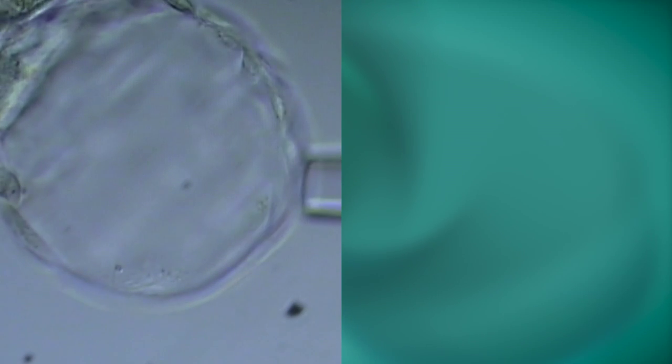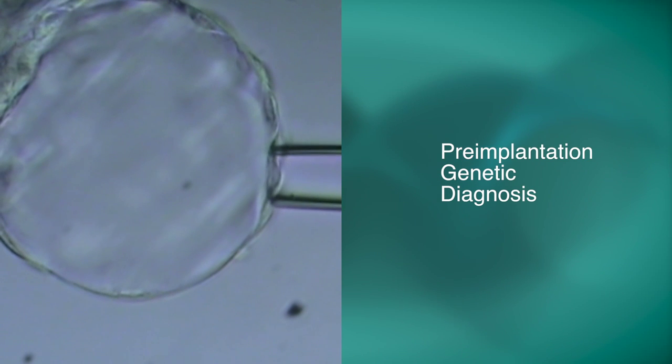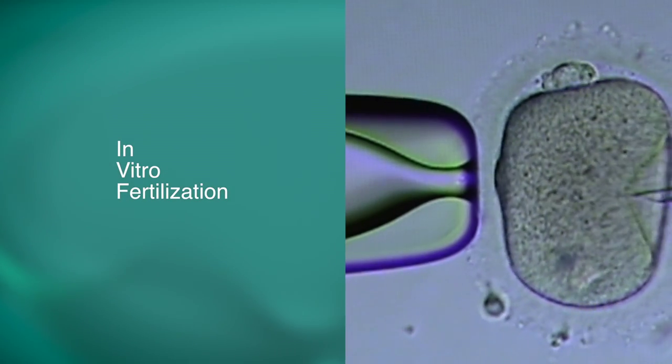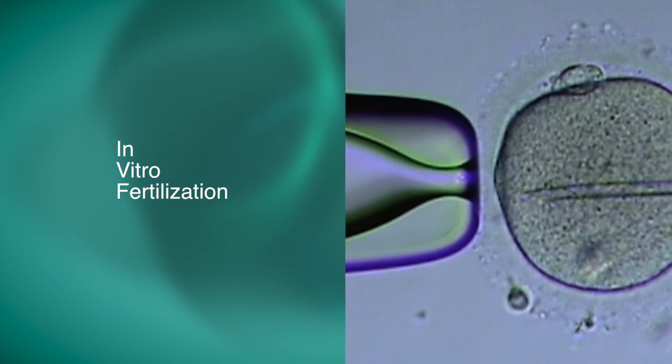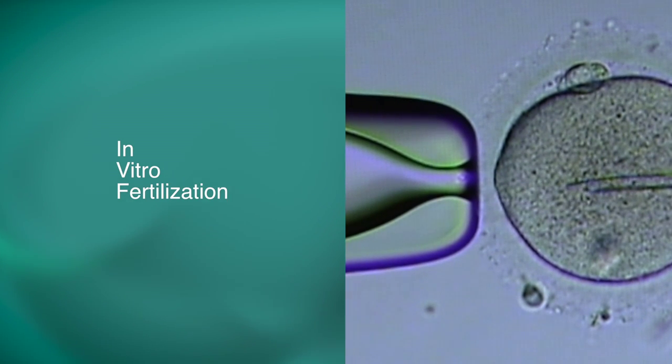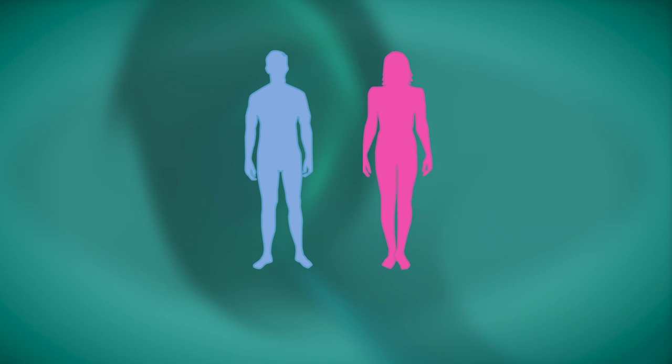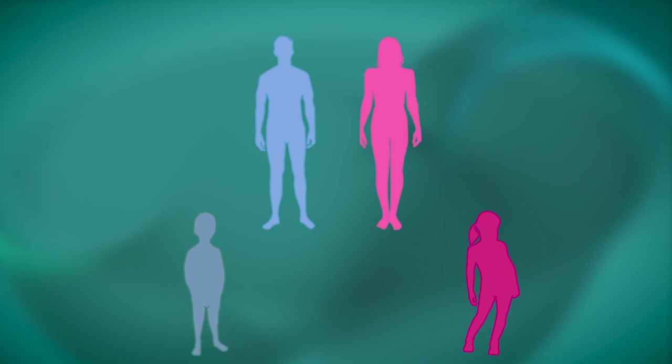The second type of testing that can be performed on the embryo is pre-implantation genetic diagnosis, PGD. Pre-implantation genetic diagnosis is a technique used in conjunction with in vitro fertilization to test embryos for specific genetic disorders prior to their transfer to the uterus. PGD makes it possible for couples or individuals who have or who carry serious inherited disorders to decrease the risk of passing the disorder onto their child.